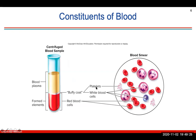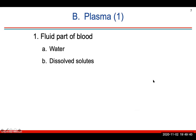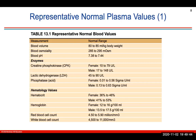The platelets and white blood cells are found in the buffy coat. There are five different types of white blood cells. Platelets are responsible for clotting, and red blood cells (erythrocytes) carry oxygen in hemoglobin. Plasma is the fluid part of blood and includes water and dissolved solutes.